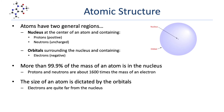When we visualize the structure of an atom, we generally think of it having two regions. A nucleus at the center of an atom that contains two types of particles: protons, which are positive, and neutrons, which are neutral or uncharged. Outside of that, we have orbitals that contain electrons, which are negative.